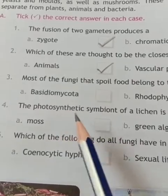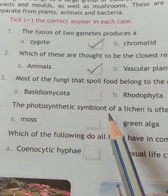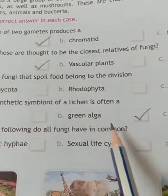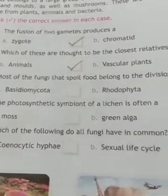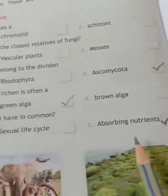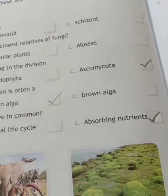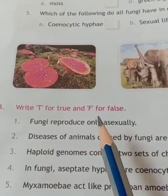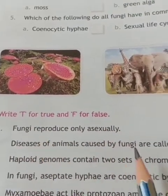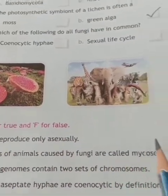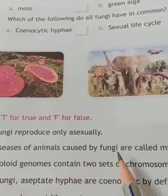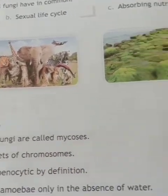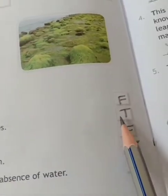Ascomycota. The photosynthetic symbiont of a lichen is often a green alga. Which of the following do dwarf fungi have in common? Absorbing nutrients. True or false: fungi reproduce only asexually? That is false. Diseases of animals caused by fungi are called mycoses – true.